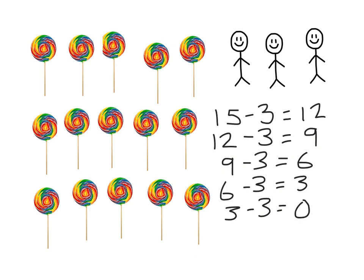Let's see how many times I had to take away 3: 1, 2, 3, 4, 5 — I took away 3 five times. So as a number story: 15 lollipops divided amongst 3 people, each person gets 5 lollipops because I had to take away 3 five times. In summary, there are two ways you can work out division problems: you could equally share out so that each person gets the same amount, or you could use repeated subtraction and count how many times you subtracted to find the same answer.